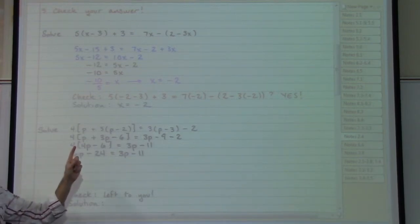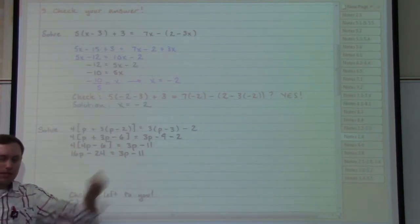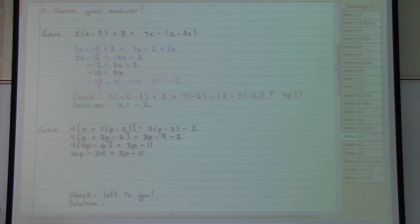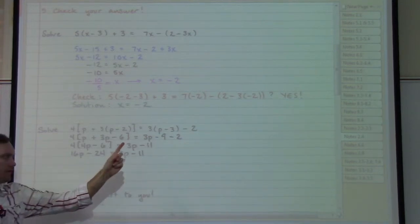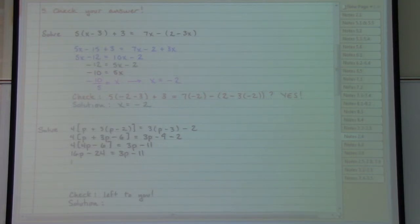We can either move the 16p or we can move the 3p. It is your choice. My personal preference would be move the 3p using subtraction so that we end up with a positive number in front of the letter p. 16p minus 3p gives me 13p. The minus 24 hasn't been touched and the minus 11 has not been touched.